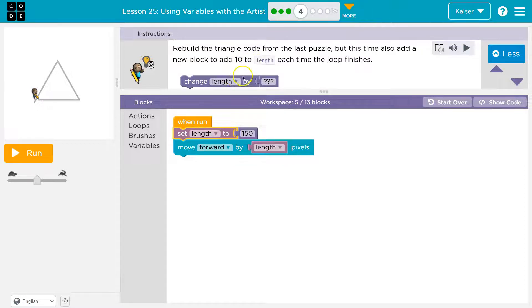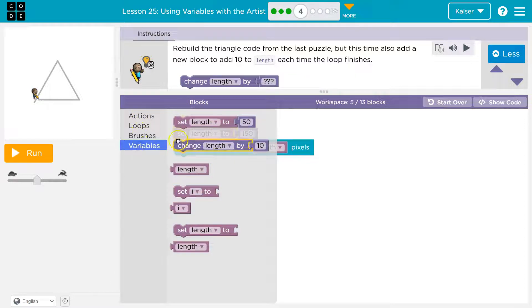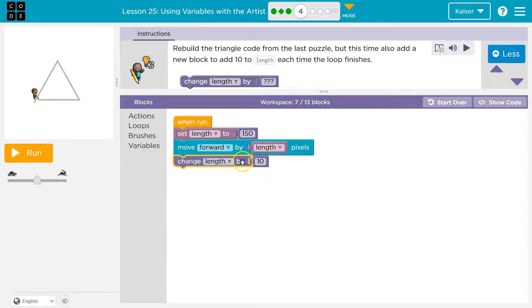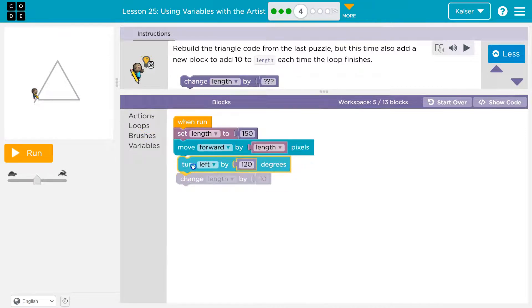Now they're asking us to add 10 to it each time. So let's see variable change. Cool. So I'm going to do change length by 10. All right, except actually before I do that, it's a triangle. Let's go ahead and turn. So turn left.